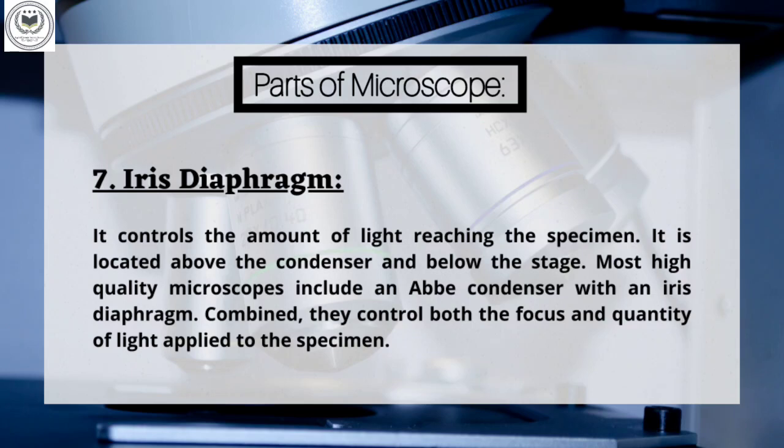Part 7: Iris diaphragm. It controls the amount of light reaching the specimen. It is located above the condenser and below the stage. Most high quality microscopes include an Abbe condenser with an iris diaphragm. Combined, they control both the focus and quantity of light applied to the specimen.